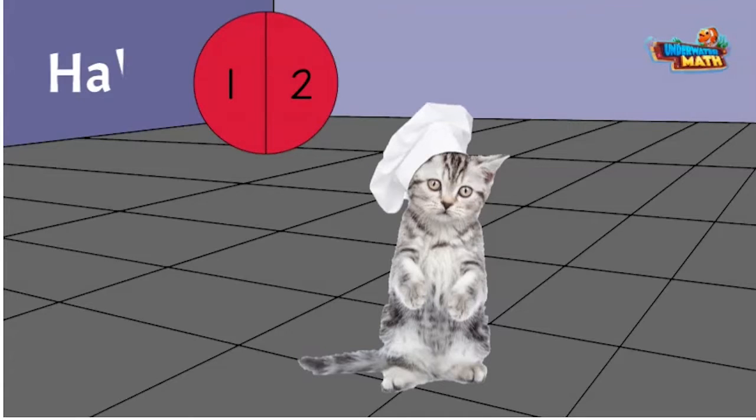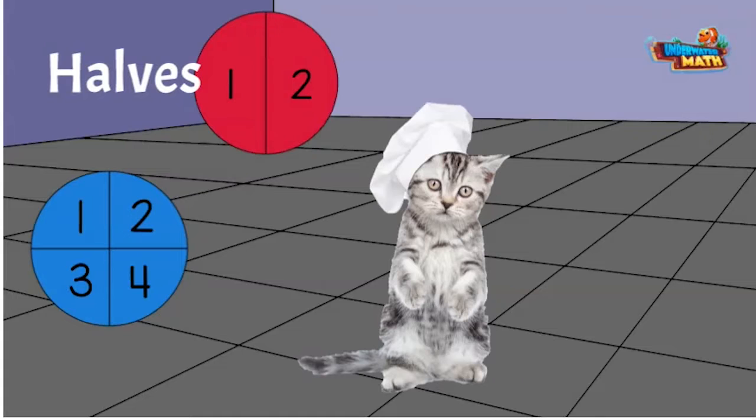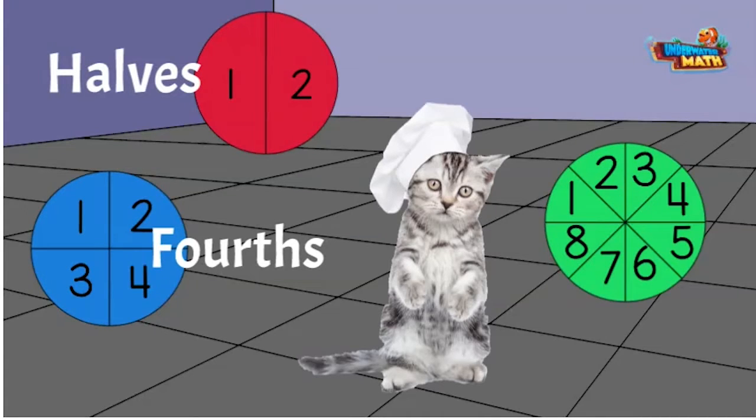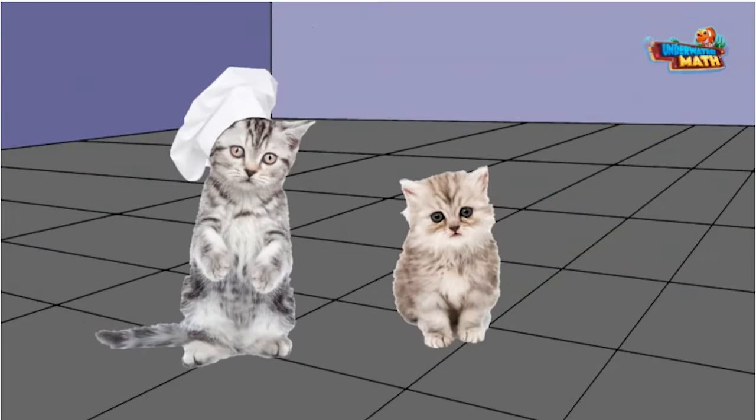These parts are called halves. Count how many parts this circle has. If you counted four, you are correct. These parts are called fourths. It takes four fourths to make the whole. This circle is split into eight parts. These parts are called eighths.